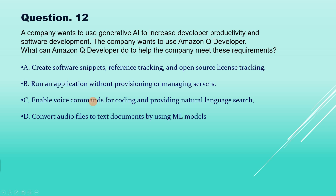The correct answer is option A: create software snippets, reference tracking and open source license tracking. This is because Amazon Q Developer is a generative AI tool designed to assist developers by increasing productivity. It helps in generating software snippets, automating reference tracking and managing open source licenses, which directly benefits the software development life cycle.